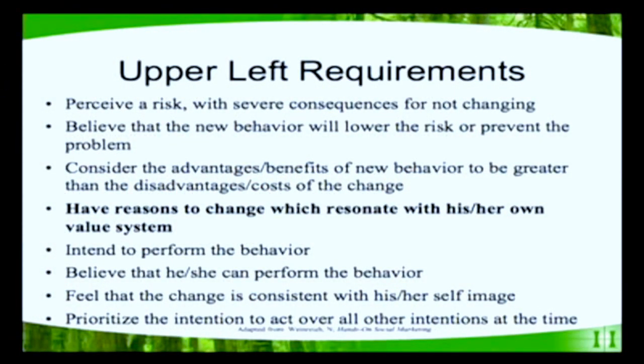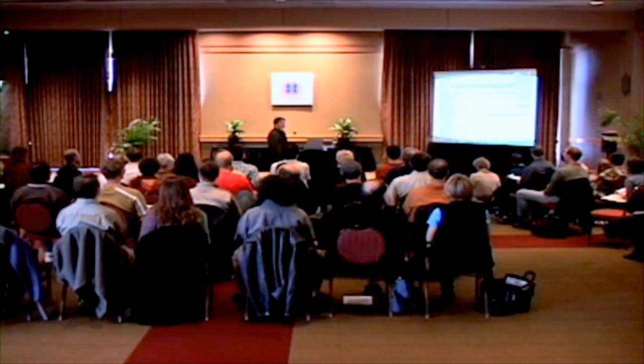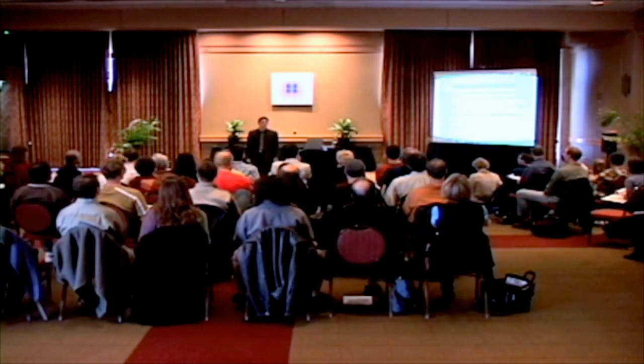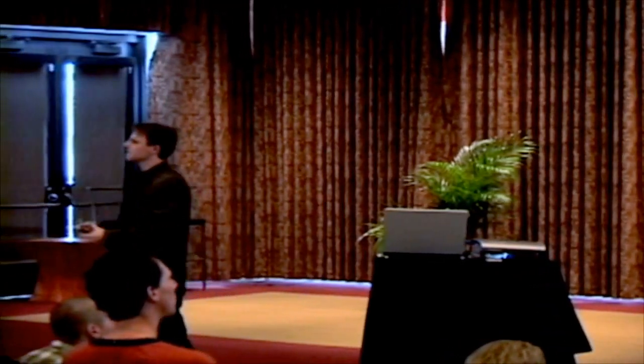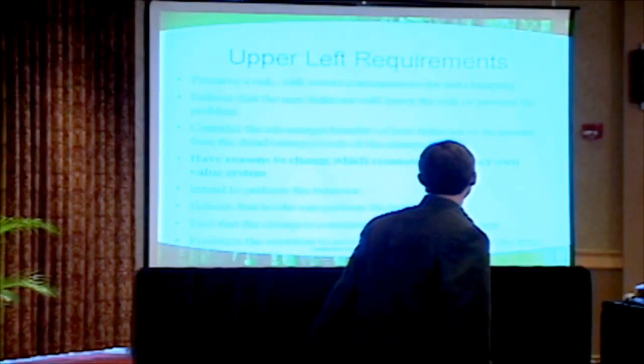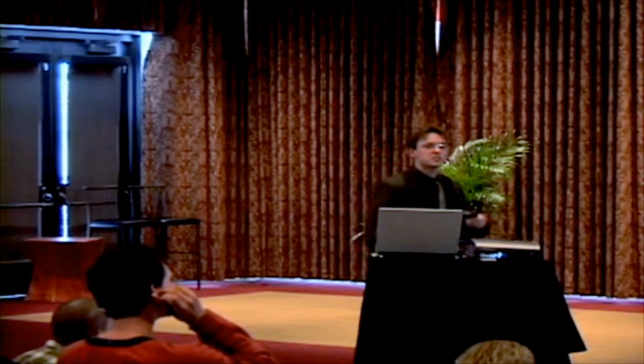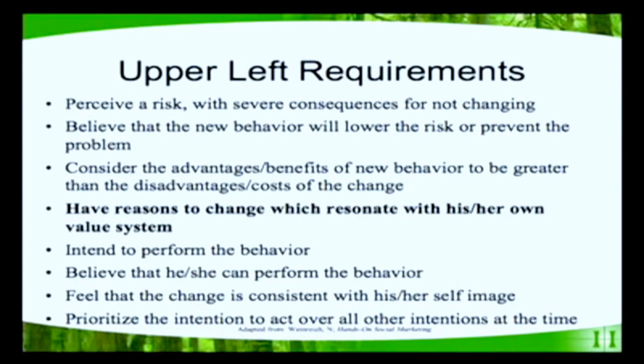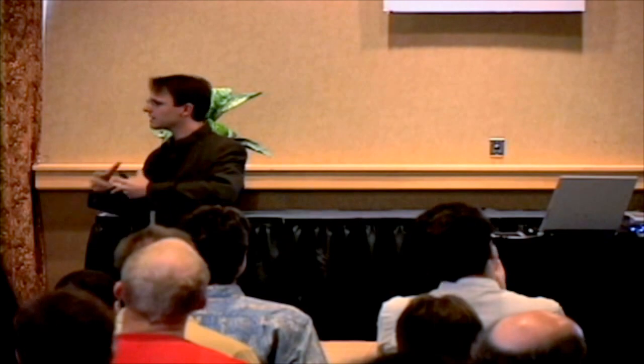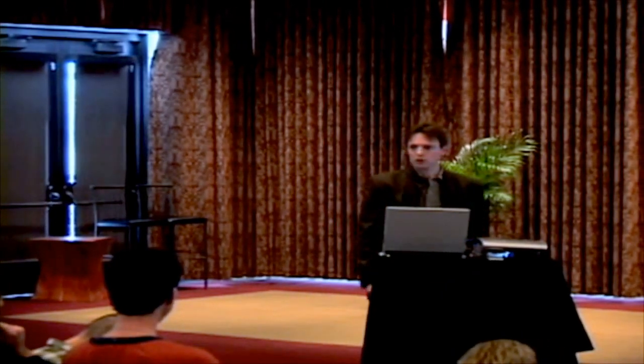First of all, someone's got to perceive that there's a risk, that there are severe consequences for not changing. There has to be a deep belief that this new behavior is going to address that risk. The person also needs to be able to identify the advantages or benefits of a new behavior and realize that those are going to be greater than the disadvantages of the old behavior. They also need to intend to perform the behavior, believe that he or she can perform the behavior, feel that the change is consistent with his or her self-image. This is called egosyntonic, where they feel that this is who I am. If I change into this person, this accurately reflects my perspective of who I am in the world. And they need to prioritize the intention to act over all the other intentions that are occurring at the time. So we're inundated with information, desires, ideas. Only 1% of what we're actually thinking, feeling, intending to do, actually ends up in behavior. It's probably less than 1%. All these things need to be going on in order for someone to change behavior.